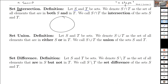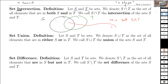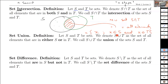Venn diagrams will help us again here. If we have the two sets S and T with individual elements, we're going to get a new set: S intersect T, which equals this overlapping region — the set of all elements X that are in S and that are in T. More formally: the set of X such that X is an element of S and X is an element of T.